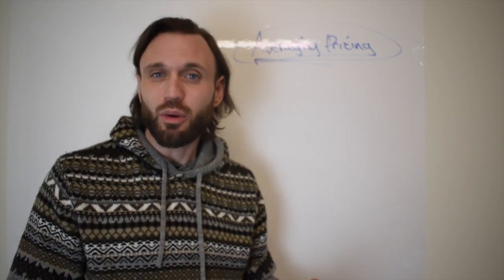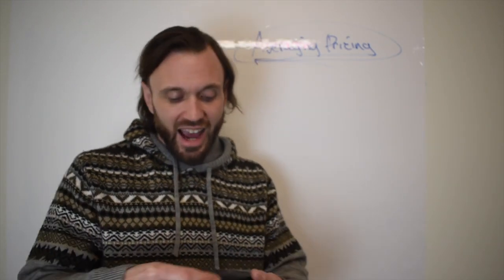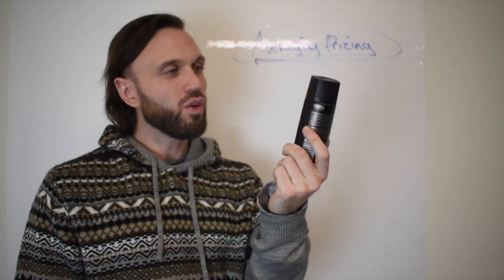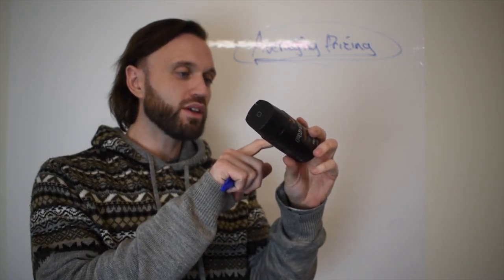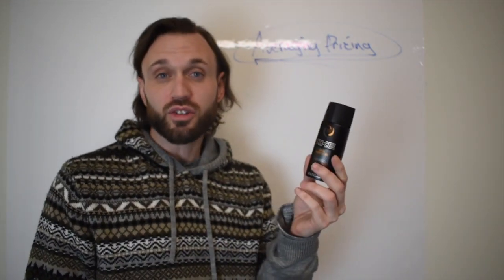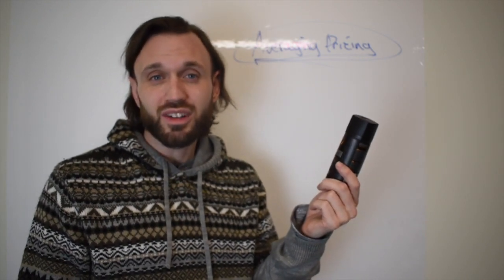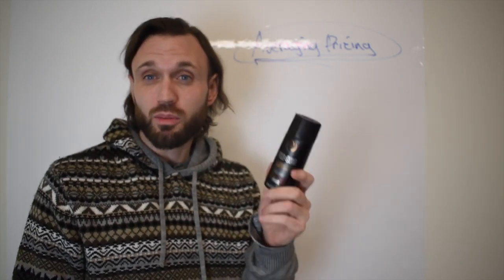For example, we have this AXE Dark Temptation, 150 milliliters. It has a thirteen-digit UPC or EAN number — a European Article Number. That tells me this product was manufactured in Europe.